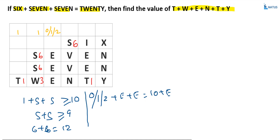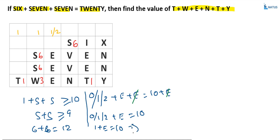If carry from this column is 0 or 1 or 2 plus E plus E plus E equals 10 plus E, then E gets cancelled, giving 0 or 1 or 2 plus E plus E equals 10. If carry equals 0, then 0 plus E equals 10, so E equals 10 — contradiction. So carry of 0 is not valid. If carry equals 1, then 1 plus E equals 10, which implies E equals 9.